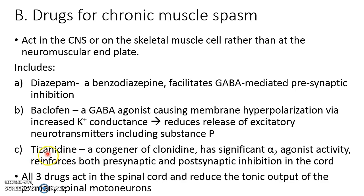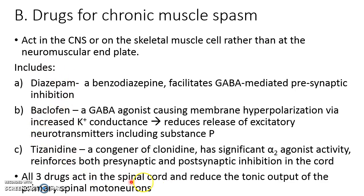Then we have tizanidine, which is a congener of clonidine and is related to it. This drug has significant alpha-2 agonist activity, which reinforces both presynaptic and postsynaptic inhibition in the cord. All three drugs — diazepam, baclofen, and tizanidine — act in the spinal cord and reduce the tonic output of the primary spinal motor neurons.